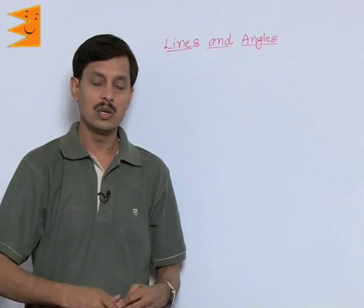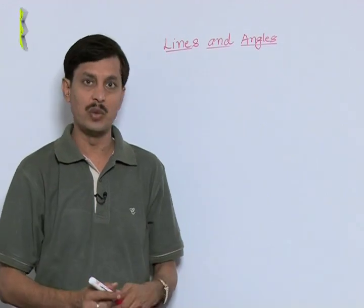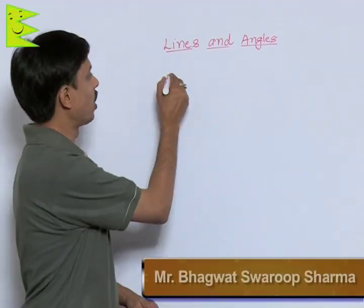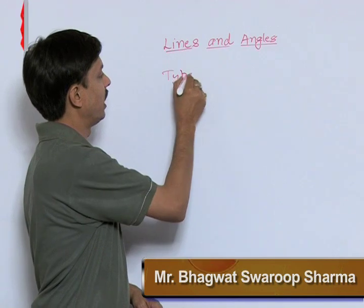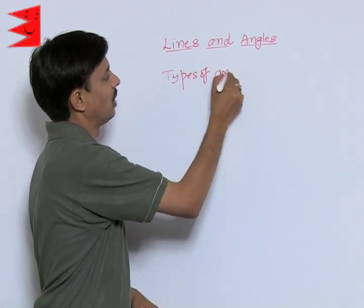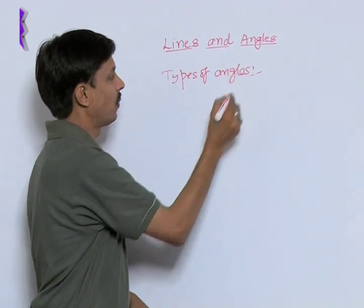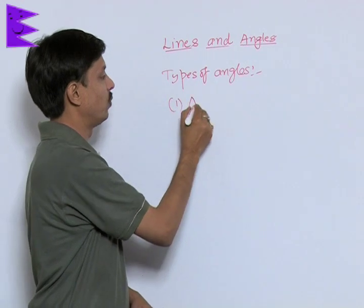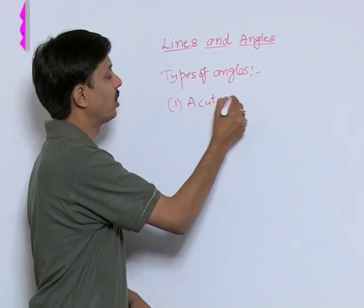Now, I want to tell you how many types of angles we can have. If we talk about the types of angles, I will tell you first we know what is the acute angle.